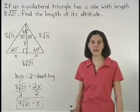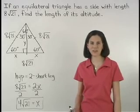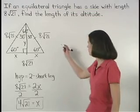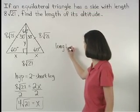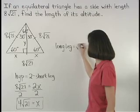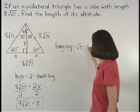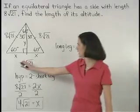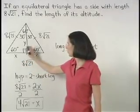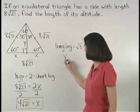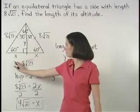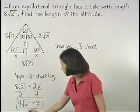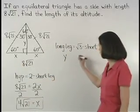To find the value of y, we know that in a 30, 60, 90 degree triangle, the long leg is root 3 times the short leg, which is root 3 times x, or root 3 times 4 root 21.